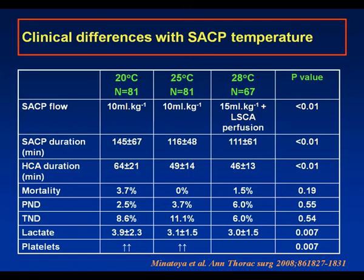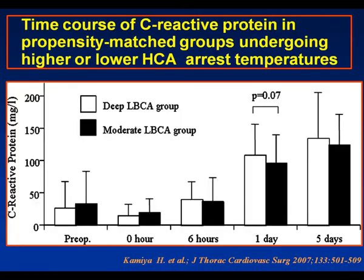Other groups have also compared higher and lower corporeal arrest temperatures. Data from Hanover studied C-reactive protein as an index of the inflammatory response generated by hypothermic circulatory arrest and found no differences in any of the groups at any time point.